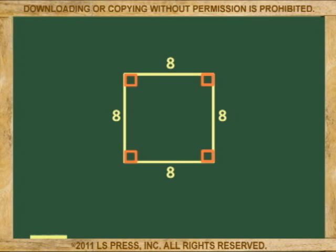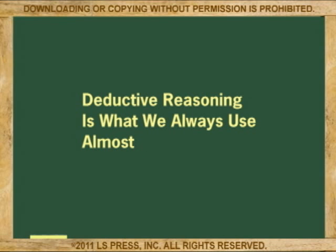You can also assume four equal angles of 90 degrees each, equal diagonals, and so on. In this lecture, deductive reasoning will be used almost exclusively.